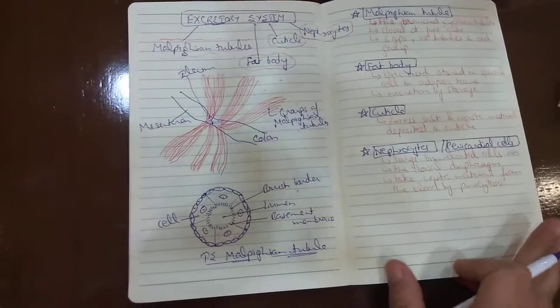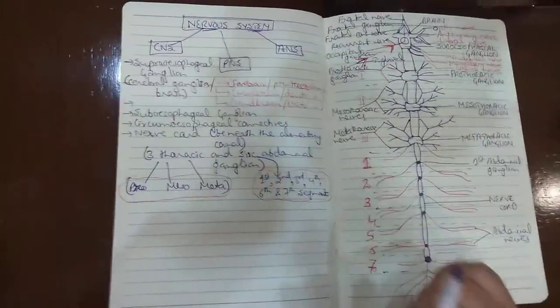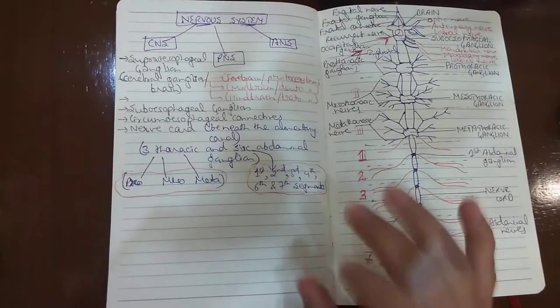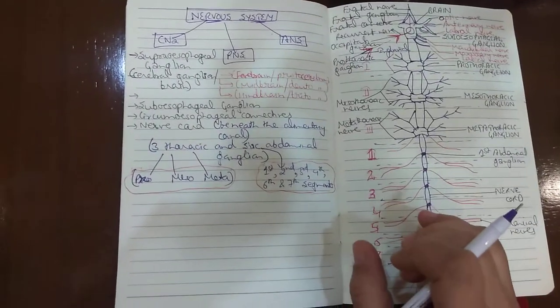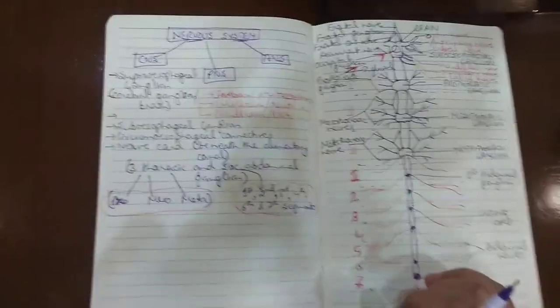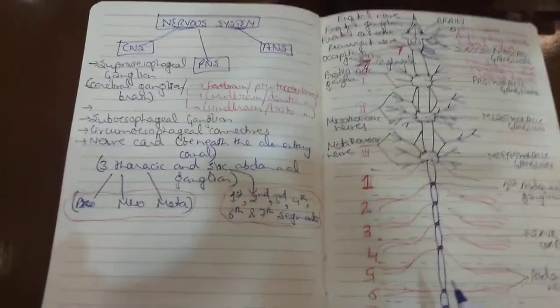This was about the excretory system. The cockroach basically does not take in much water; rather, it loses water. To overcome this loss of water, it closes the spiracles when there is no requirement for them. Most of the spiracles remain closed, as the spiracles are involved in the loss of water by evaporation.